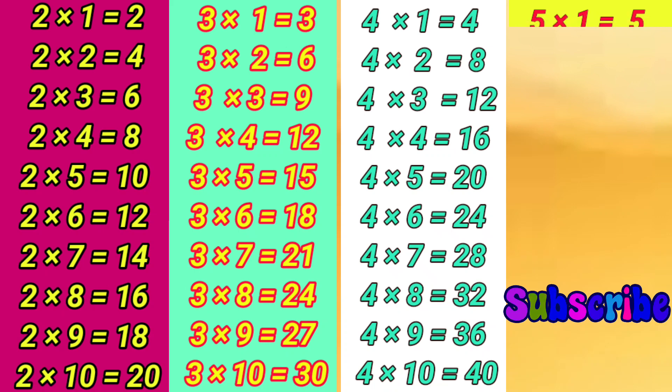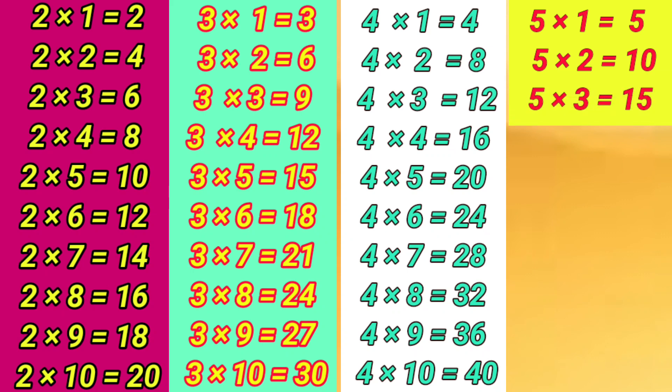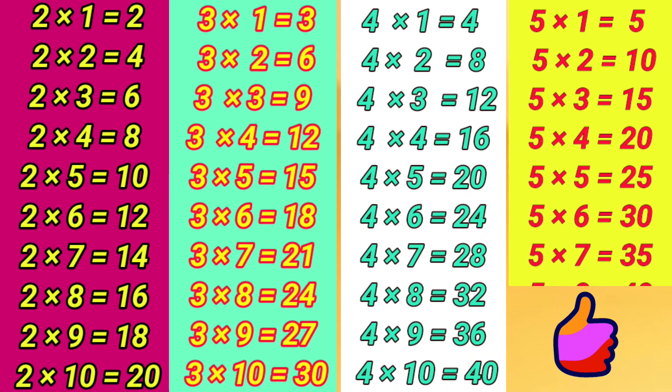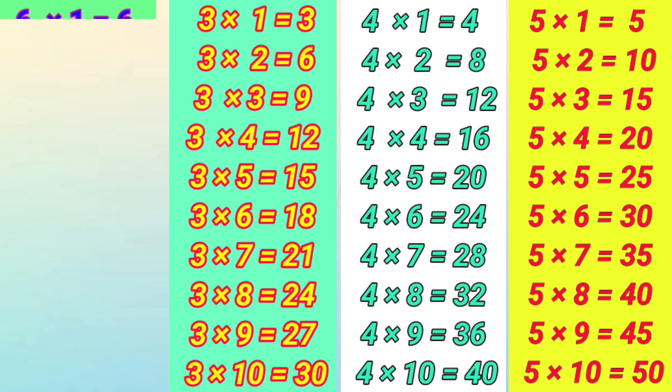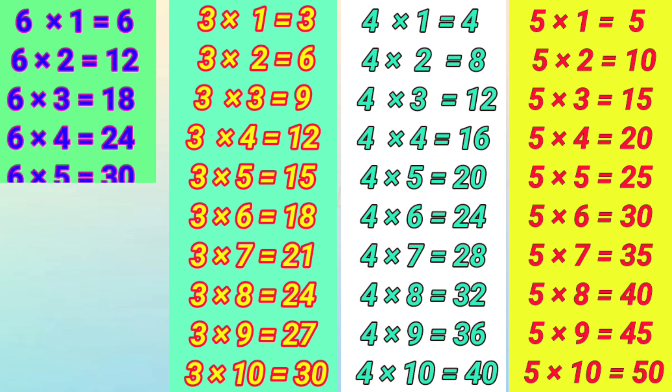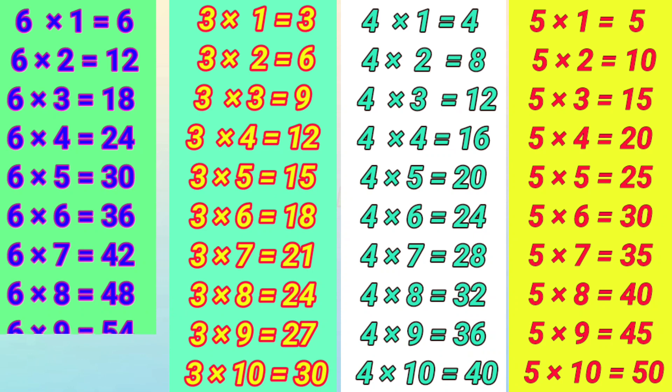5×1=5, 5×2=10, 5×3=15, 5×4=20, 5×5=25, 5×6=30, 5×7=35, 5×8=40, 5×9=45, 5×10=50. 6×1=6, 6×2=12, 6×3=18, 6×4=24, 6×5=30, 6×6=36, 6×7=42, 6×8=48, 6×9=54.